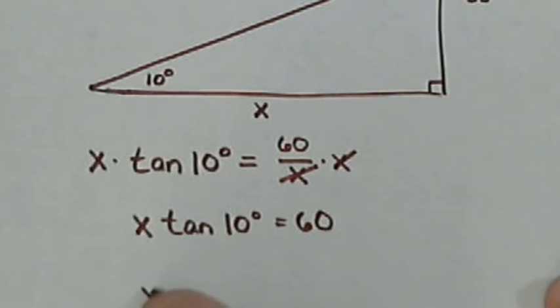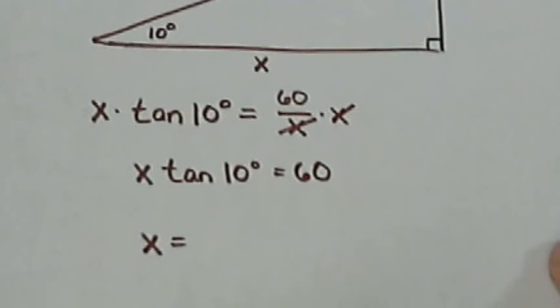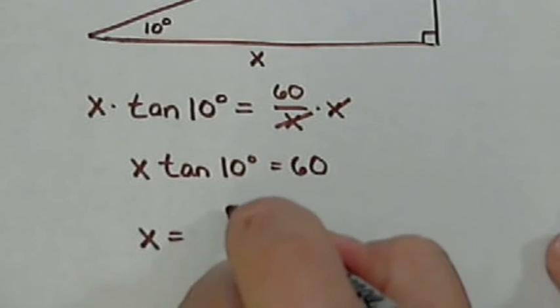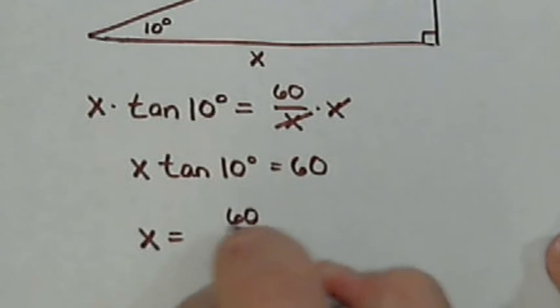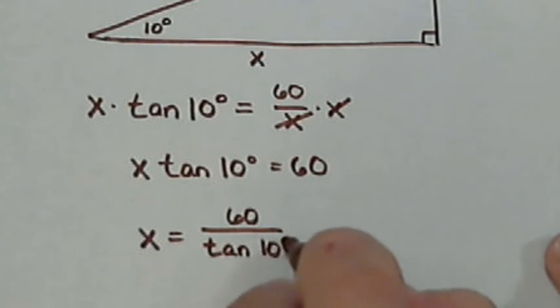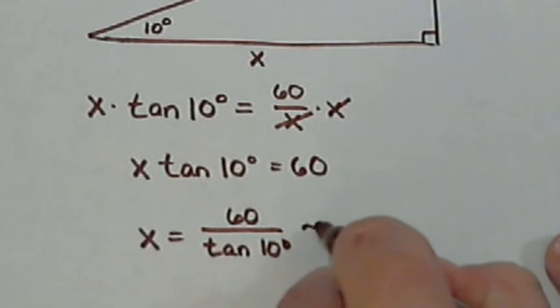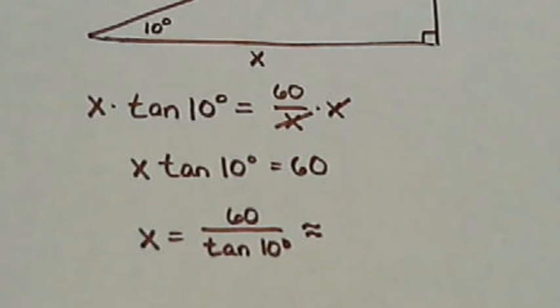We're going to get the x by itself which means we're going to divide both sides by the tangent of 10 degrees. And now we've got the x by itself and we can calculate this out.